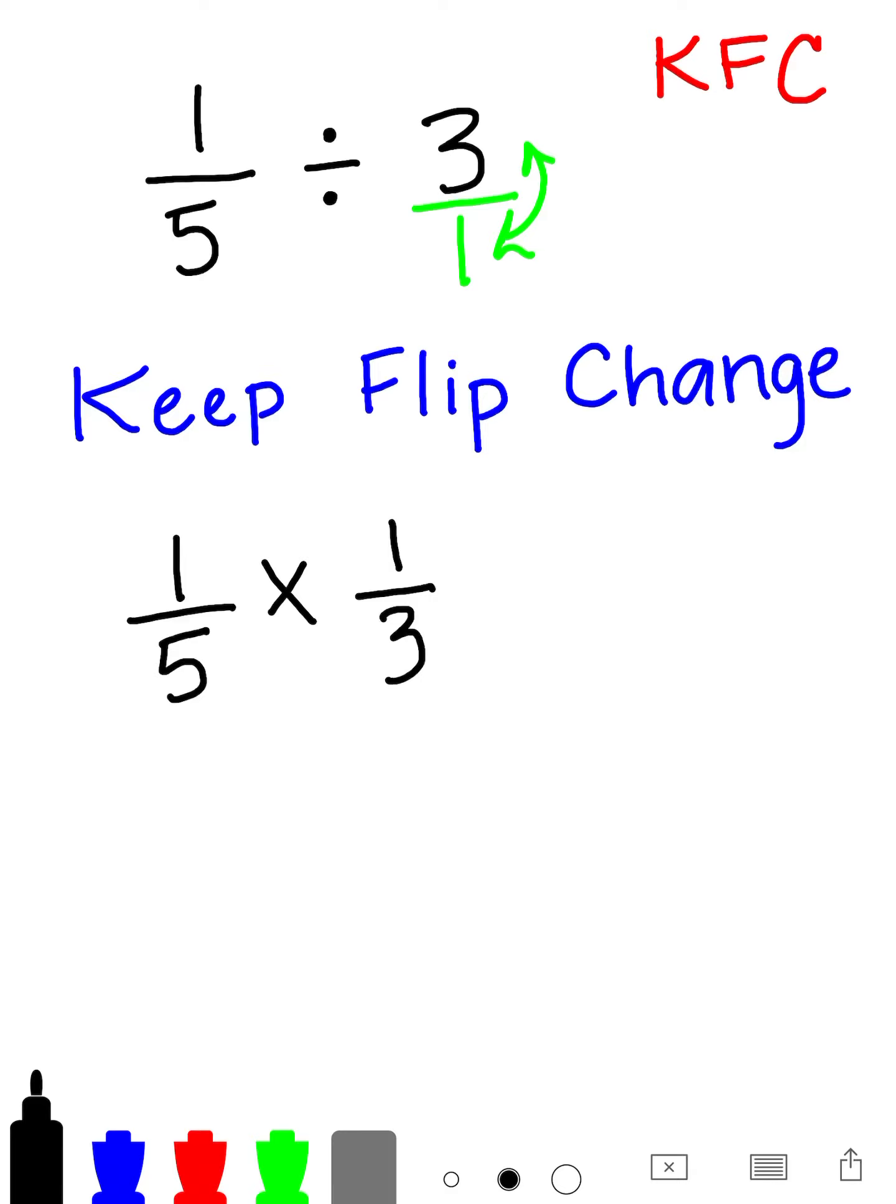So we've kept the first number. Keep the first number the way that it is, which in this case is 1 fifth. Flip the second number. We had to change that into a fraction by putting a 1 underneath it, and then just flipping those two numbers, and then changing the division sign to a multiplication sign. And now that we have a multiplication problem, we can multiply straight across. So 1 times 1 is equal to 1, and 5 times 3 is equal to 15.